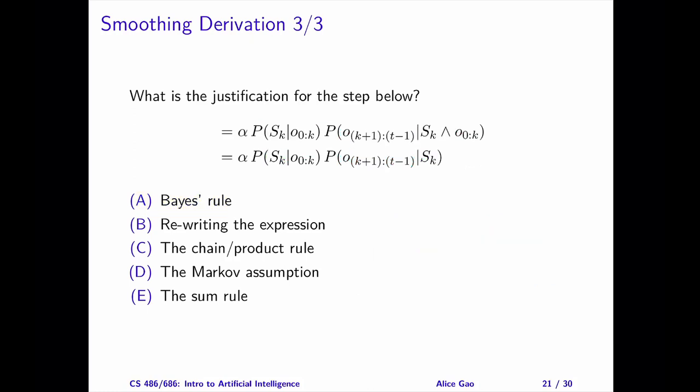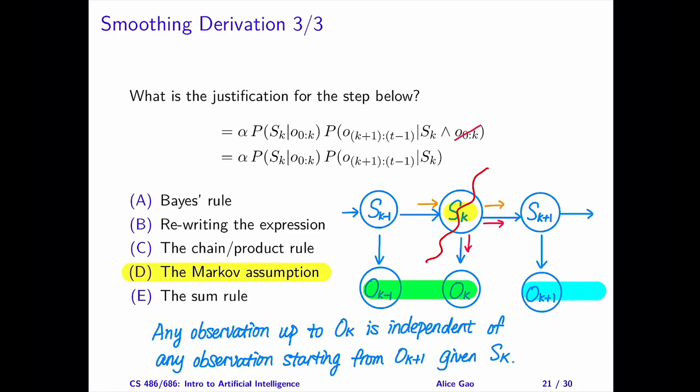Step 3. Pause the video and choose an answer. The correct answer is D, the Markov assumption. This step removes o sub 0 to k from the second term. The Markov assumption is basically a conditional independence relationship. In this case, given s sub k, the state on day k, the future observations are independent of the past observations. That is, any observation up to day k is independent of any other observation from day k plus 1 onward, given the state s sub k.